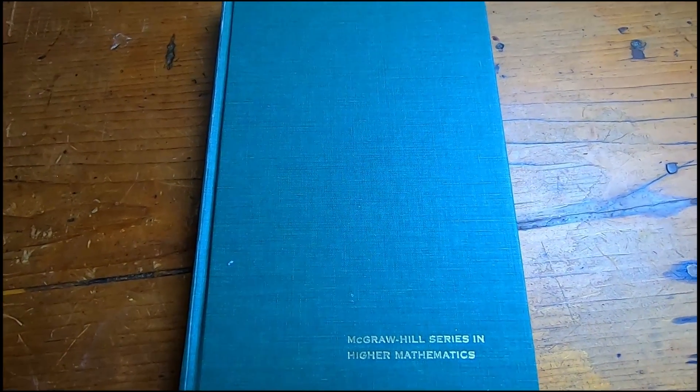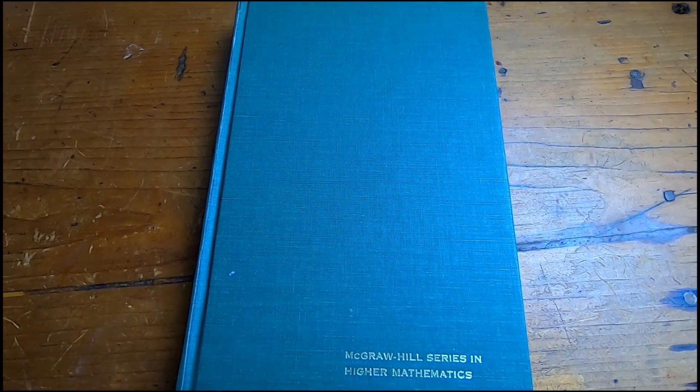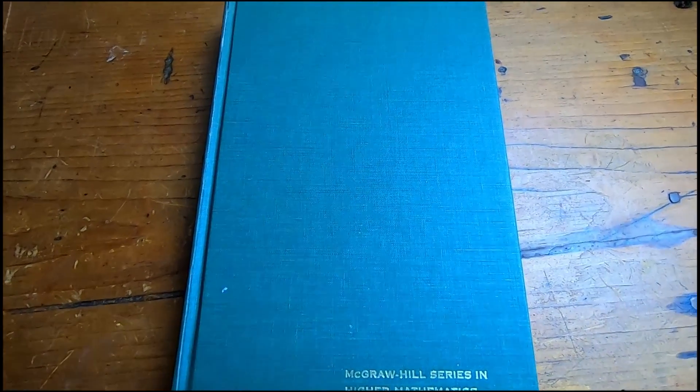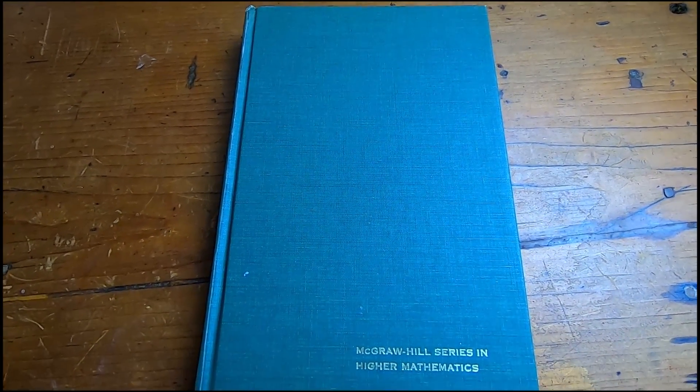Again, the book is Real and Complex Analysis by Walter Rudin. This is called Papa Rudin. It's a famous book on real analysis. It's probably the most famous book in the entire world on measure theory.